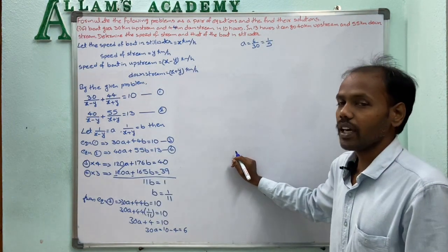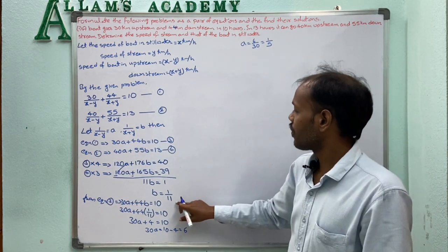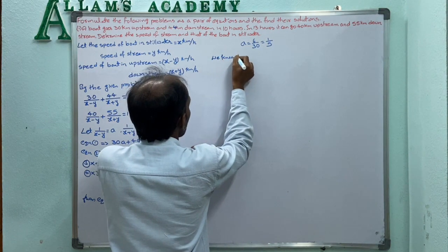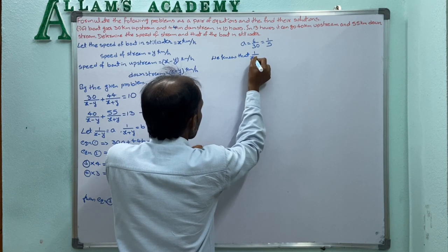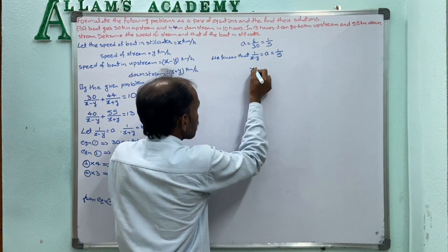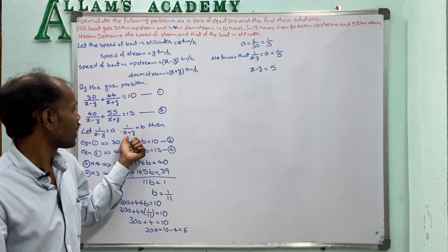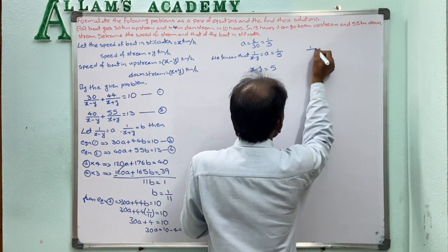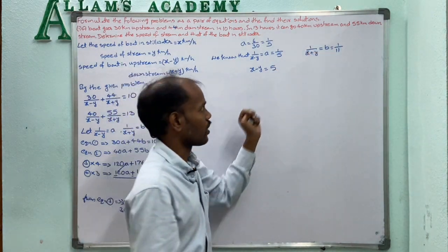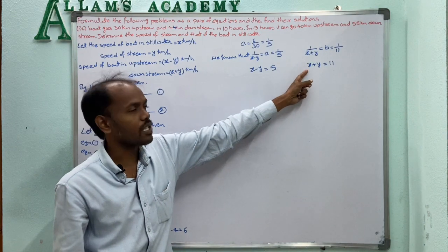Now, 1/(X−Y) equals A equals 1/5, so by reciprocal X minus Y equals 5. And 1/(X+Y) equals B equals 1/11, so by reciprocal X plus Y equals 11.